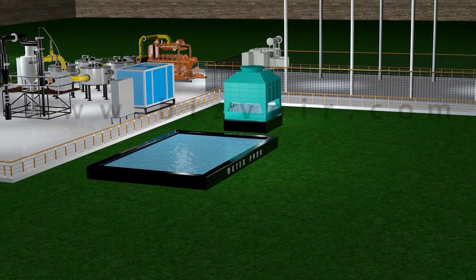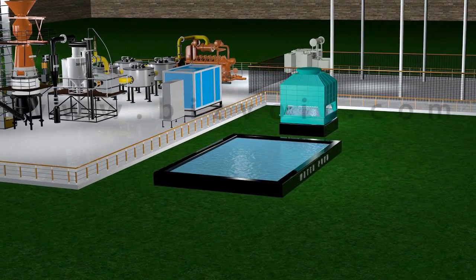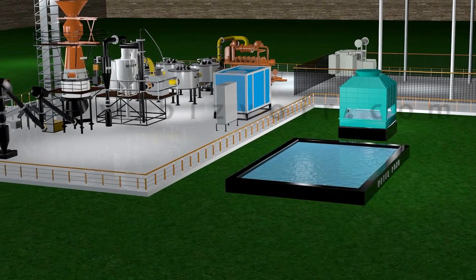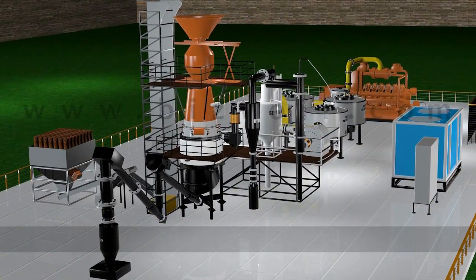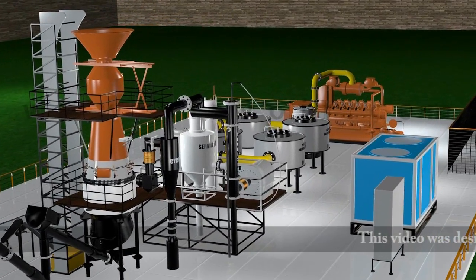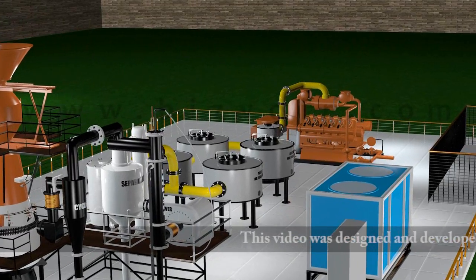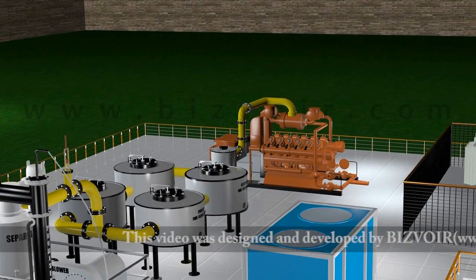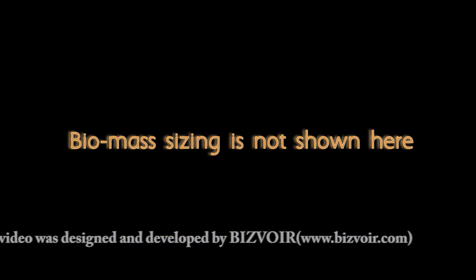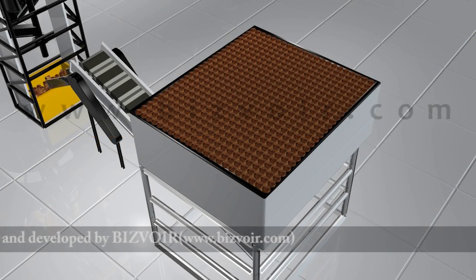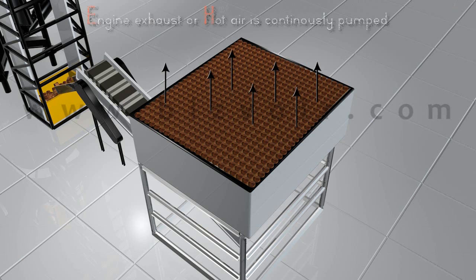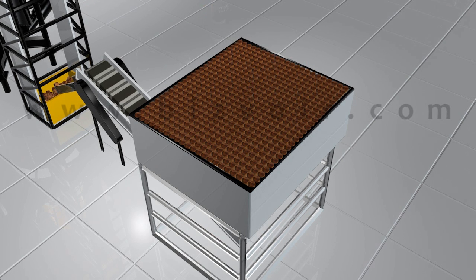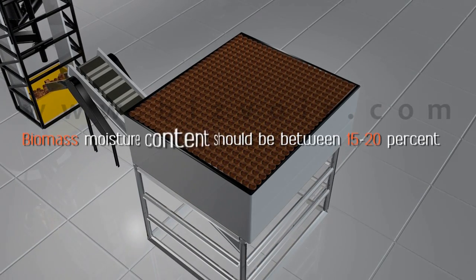A typical setup for an Ankur gasifier-based power plant is shown. Biomass sizing is not shown here, but the starting point is the dryer. This equipment stores a certain amount of biomass through which engine exhaust or hot air is continuously pumped. This reduces the moisture content of the biomass to less than the required 15 to 20 percent.